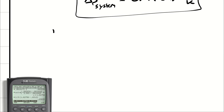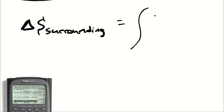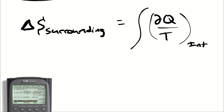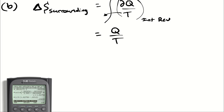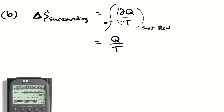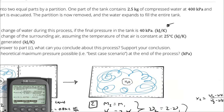Part A is done. Part B asks for the entropy change of the surroundings. I can't look up the surroundings' entropy directly, so I go back to the definition of entropy. For an internally reversible process like what the surroundings experience, delta S equals the integral of dQ/T. Since T comes out of the integral, this becomes Q/T. The entropy change of the surroundings is Q/T, where T is 25 degrees Celsius.